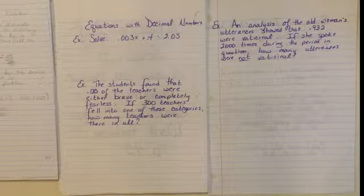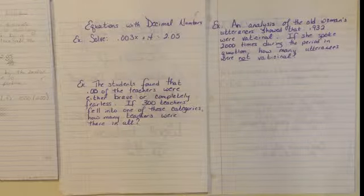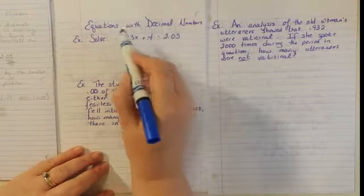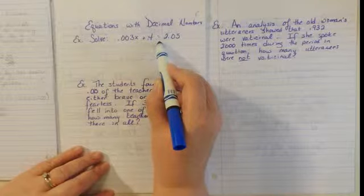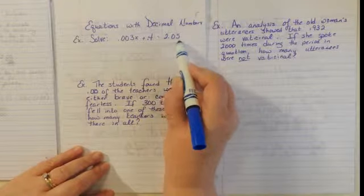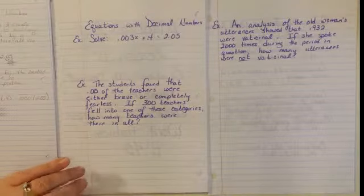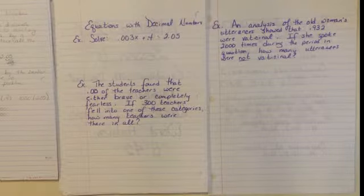When an equation contains decimals, it's sometimes helpful to multiply every term in the equation by a power of 10 that will turn all of the decimals into integers. It will be easier if we multiply all the terms by the smallest power of ten that will leave no decimals behind.